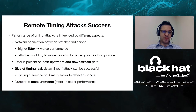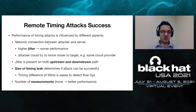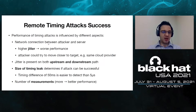In timing attacks we always compare the baseline with a target, and use statistical tests to determine whether there is a real difference. The performance depends on various factors: the network jitter between attacker and server degrades performance, and an attacker can try to mitigate this by moving closer to the target — for instance by renting a server at the same cloud provider as the victim.